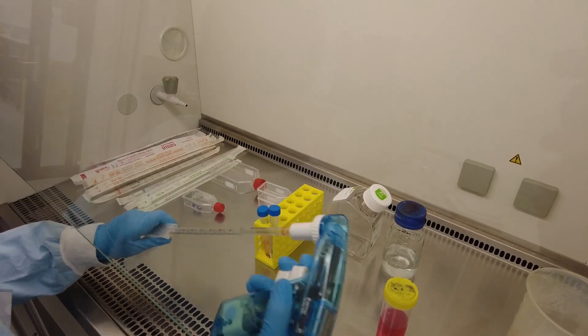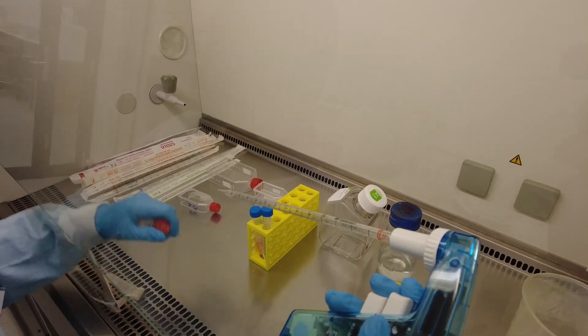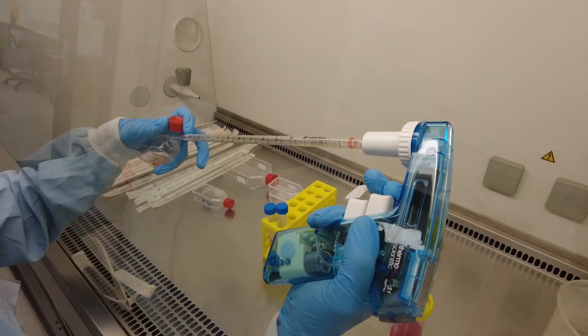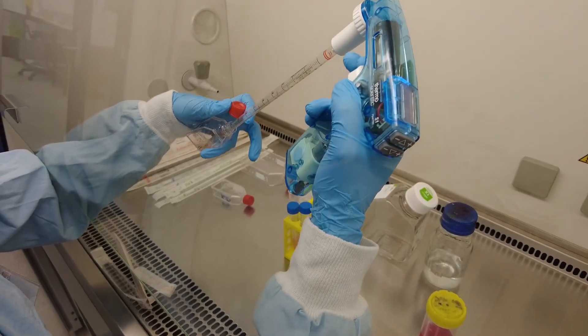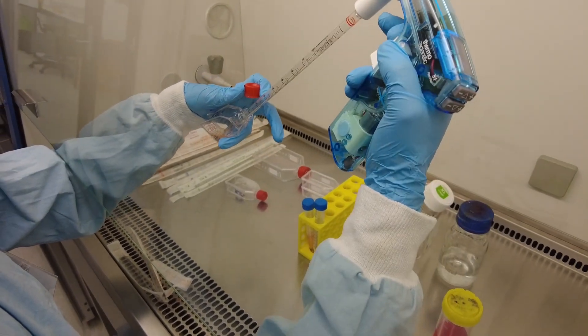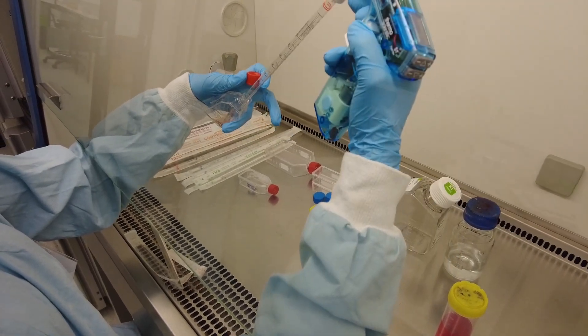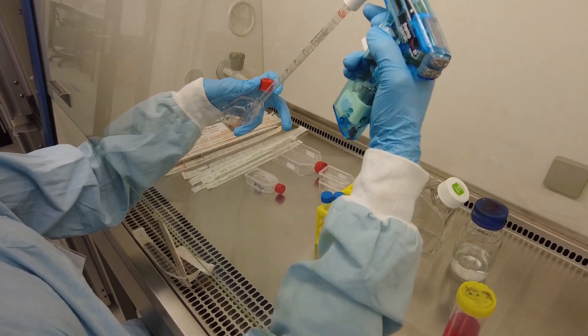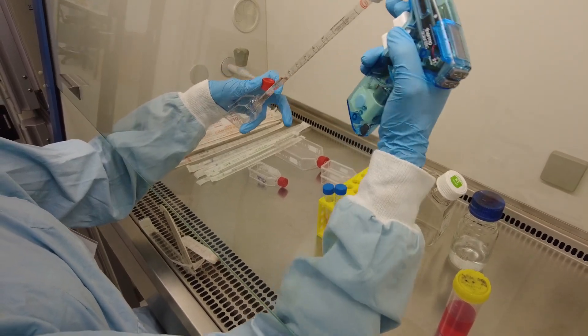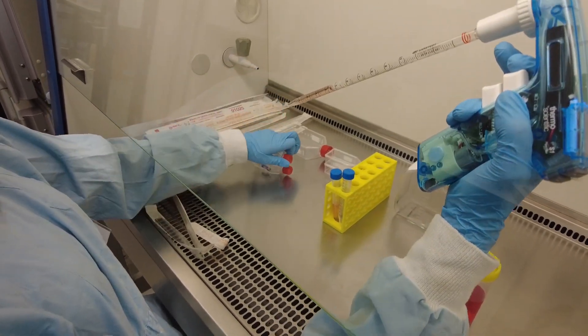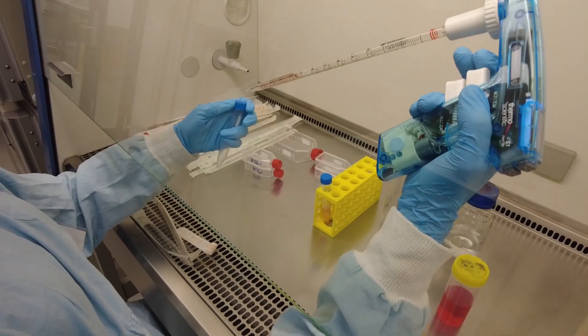Same thing for the second one. We're just pipetting everything washing the bottom of the flask in case any cells are left over. Then we're taking up all the liquid into another centrifuge tube.